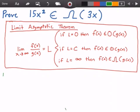We want to take the limit as x approaches infinity of f of x divided by g of x. So what is our f of x and what is our g of x? Well, our f of x is 15x squared and our g of x is 3 times x. So this is equal to the limit as x approaches infinity of 15x squared divided by 3 times x.